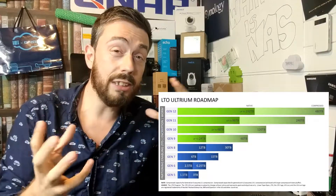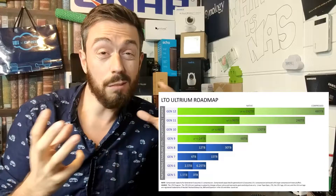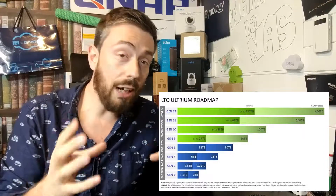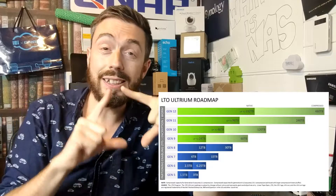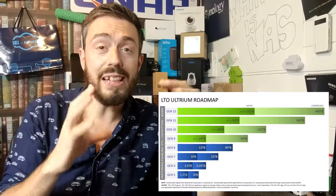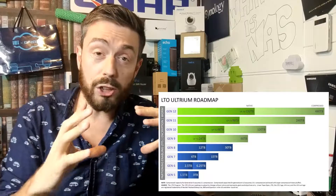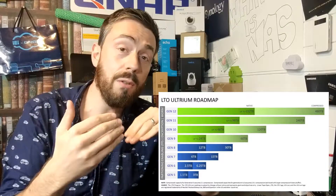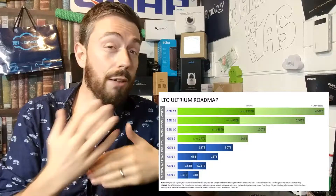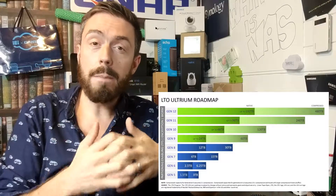In terms of LTO 7, that's the latest generation around at the moment. You can store between 6 and 15 terabytes of data per tape. That 6 to 15 terabytes is based on compression technique, with more advanced compression techniques being readily available from tape loaders, meaning that that 15 terabytes of data, once it's stored on there, you've got it forever.